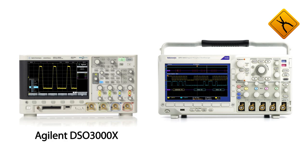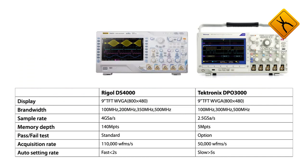Rigol oscilloscopes have a number of advantages over their closest competitors Agilent DSO3000X and Tektronix DPO3000. Compared to the Rigol series, Tektronix oscilloscopes have a sample rate of 2.5 gigasamples per second versus 4, and memory depth of 5 megapoints versus 140.